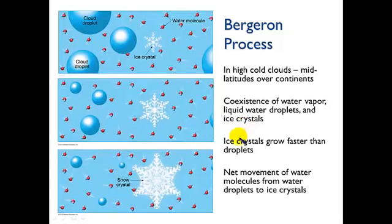And what's happening in the Bergeron process is that the ice crystals are growing faster than the droplets. So the key here is that precipitation is formed in the form of ice crystals. Now when it finally reaches the ground it can be rain because it may have melted by then. But the formation of the precipitation is in the form of ice.